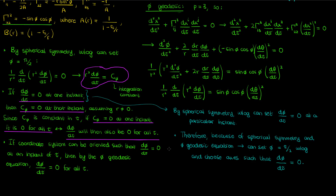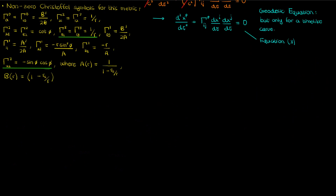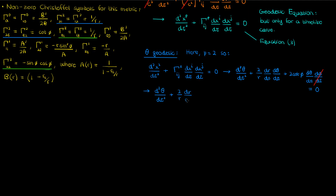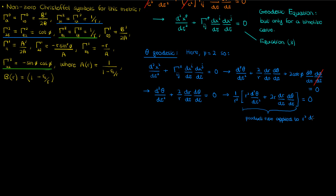Since dφ/dτ = 0 always, geodesics are confined to two spatial dimensions. Now for the θ geodesic equation, corresponding to p = 2. The nonzero Christoffel symbols with superscript 2 are Γ²₁₂, Γ²₂₁, Γ²₂₃, and Γ²₃₂. Plugging those in and substituting the coordinates, then setting dφ/dτ = 0 from the φ geodesic equation, the θ geodesic simplifies. Taking 1/r² outside, the bracket is just the product rule applied to r² times dθ/dτ.